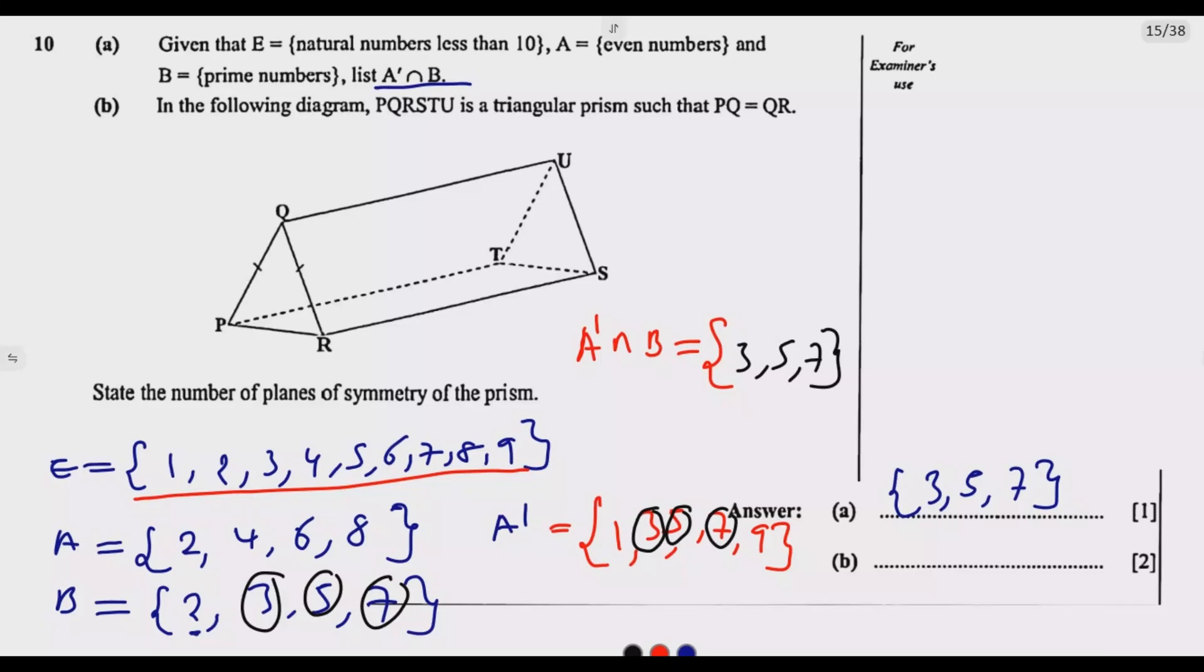Then, number 2, we need to state the number of planes of symmetry of this triangular prism. So we're looking for a plane of symmetry that divides this 3D into two identical mirror halves. So because when you look at this one, then the prism is an isosceles triangle base, which is in this base. In this base, because its two sides are equal, so it has that.